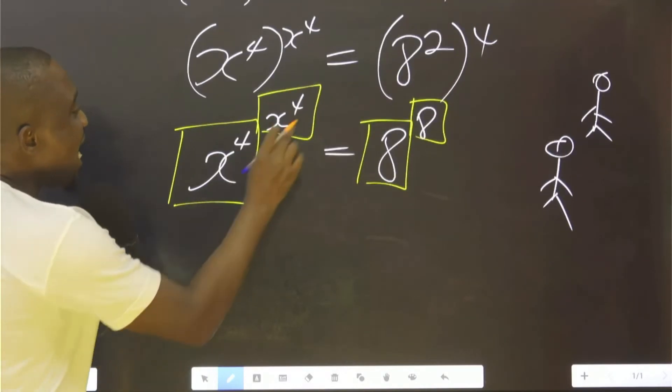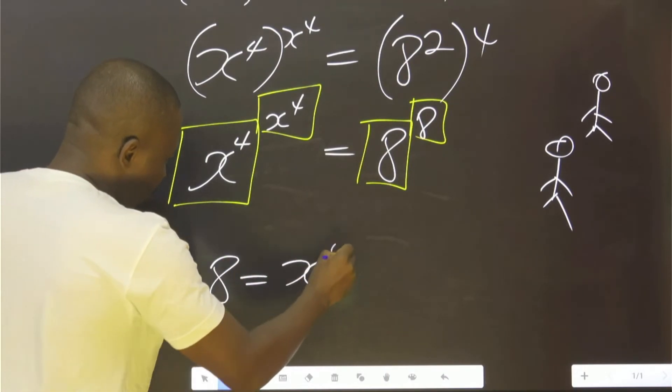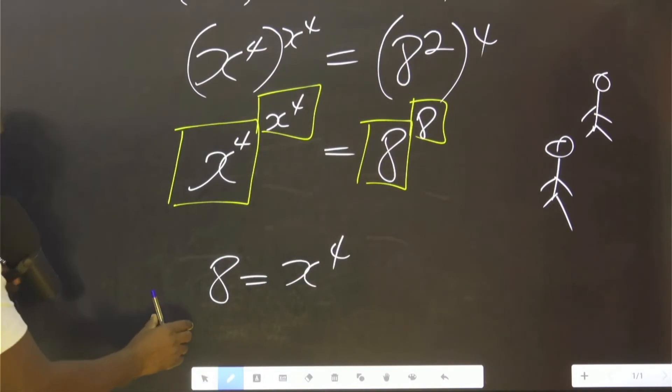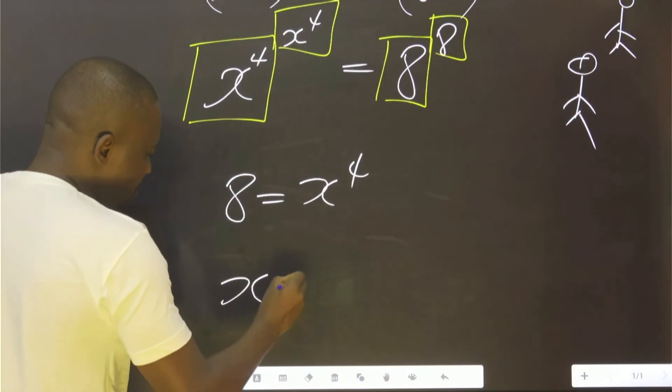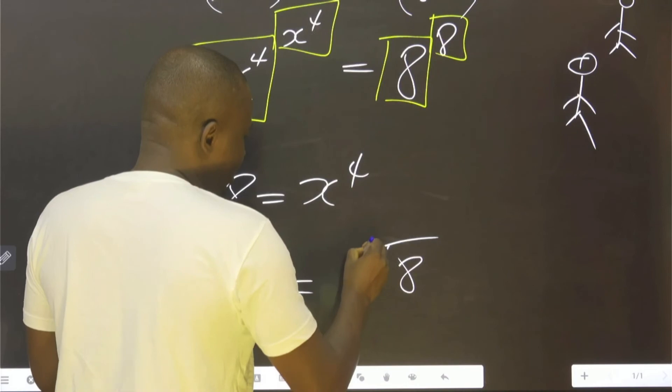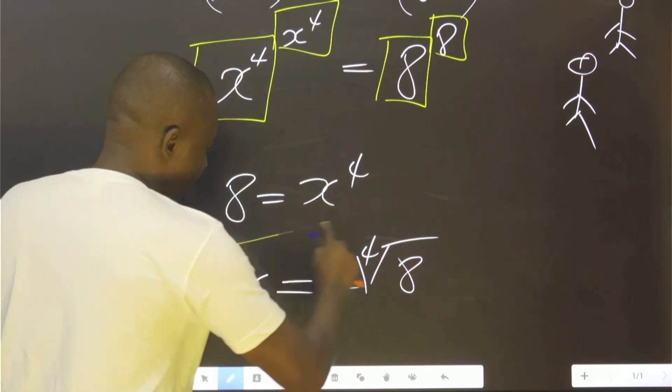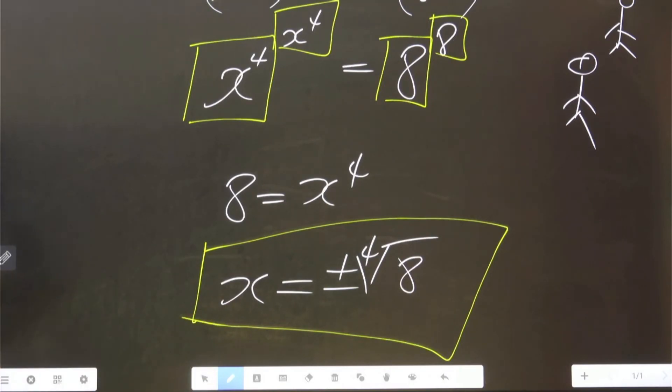8 as a number is equal to x raised to power 4. You agree with me? To find x, simply say x is the fourth root of 8, plus or minus. So this is the value of x.